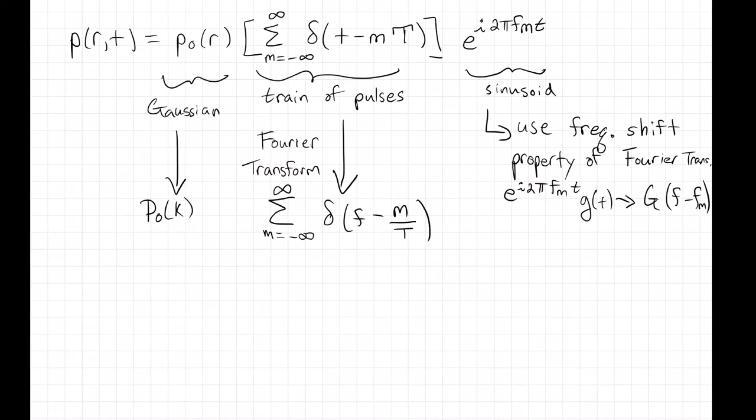So then if I put all that together, I can write out the combined Henkel and Fourier transform as the Henkel transform of the spot shape, and then this combined Dirac comb that has this weird offset in frequencies.